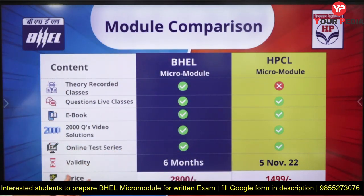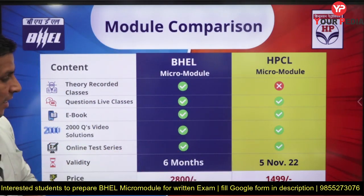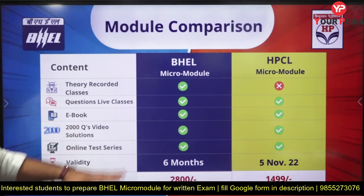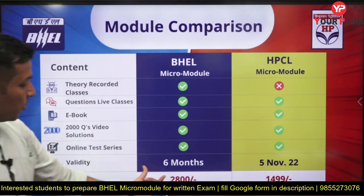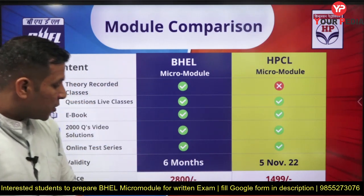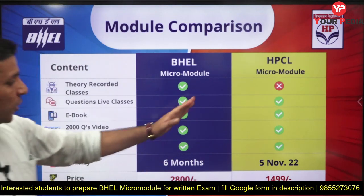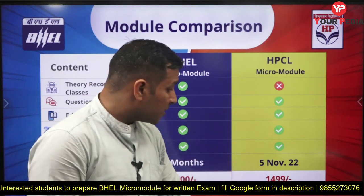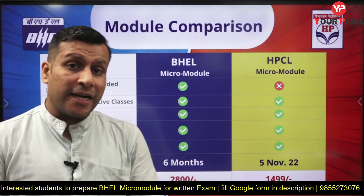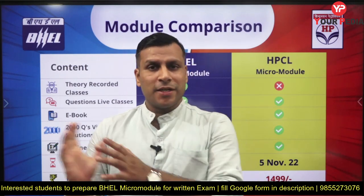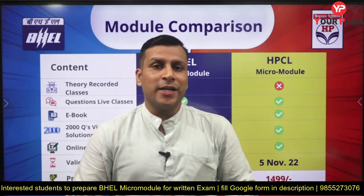Let me discuss the pricing. The BHEL micro module is priced at ₹2800 and the HPCL micro module is ₹1500. For more details you can visit our Europedia website.